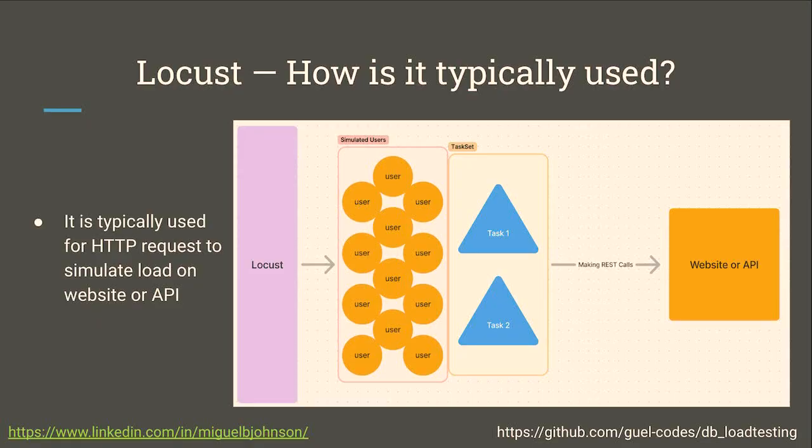How is Locust typically used? It's typically used for website and API testing. What it does is spin up simulated users using G events and Greenlets for co-routines, giving you some concurrency. It'll spin up these users, give them a task set — a list of tasks like hit this endpoint, do this thing, log in — and then it'll hit that API or website to do that.